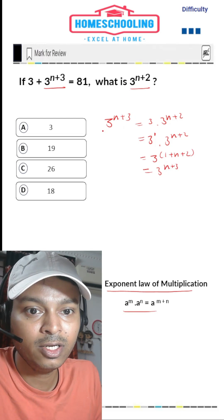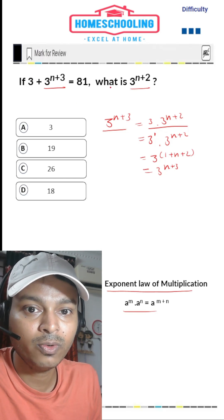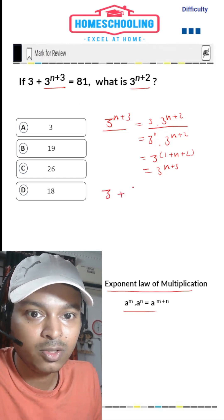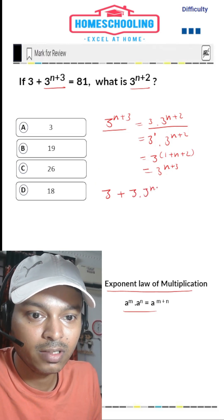From this, we can say that 3^(n+3) equals 3 times 3^(n+2). Let's write the equation now. So 3 plus 3^(n+3) is written as 3 times 3^(n+2) equals 81.